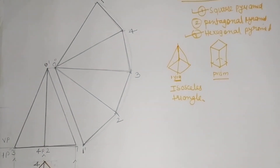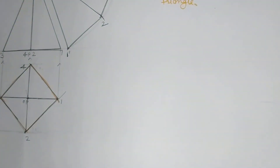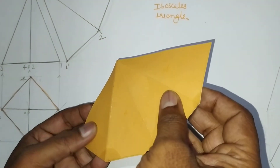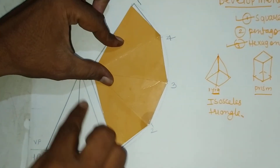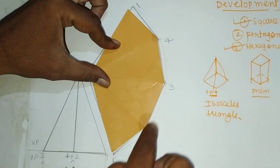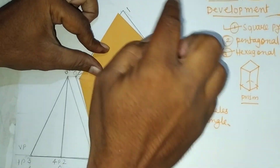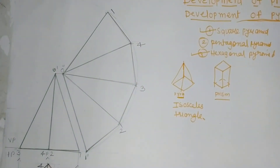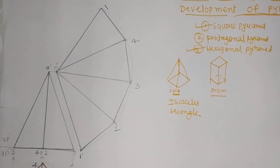We will observe the same figure here — this is a solid, that is a square pyramid. I will unfold it and open it. Here is the first triangle, second, third, and fourth. I will match it here: first triangle O-1-2, second O-2-3, third O-3-4, fourth O-4-1. So the development, after unfolding, shows four triangles. If it is a square pyramid we observe four side triangles. This is the procedure for the development of the square pyramid.